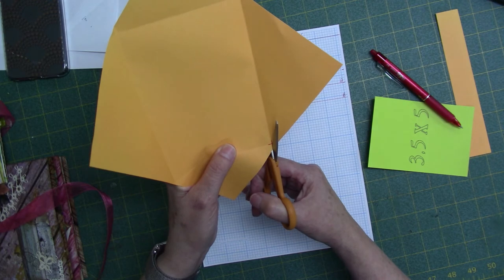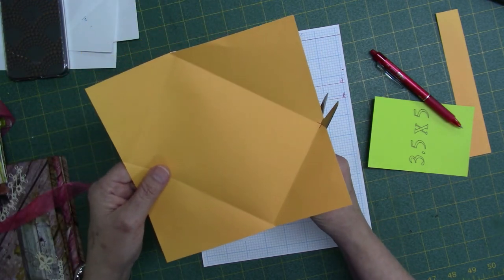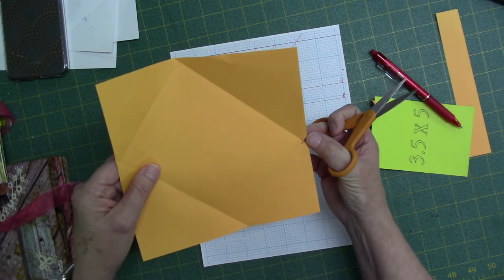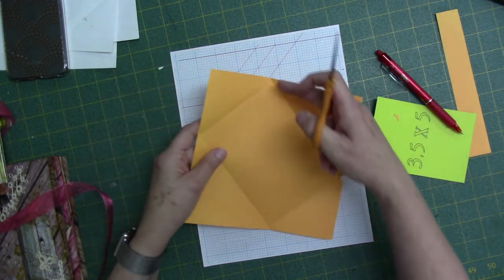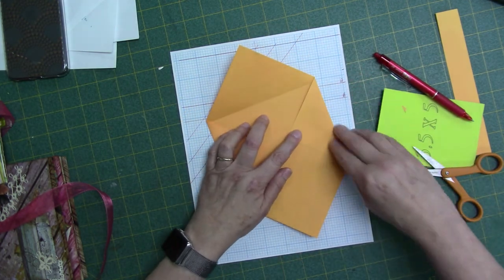But then you'll come in here with scissors if you don't have one of those corner punches or envelope punches. And you'll just kind of round it. Don't make any sharp edges. You want to kind of round that right there. You don't want a sharp edge right there. So you'll do that to all four corners so that you don't have any bulk right there.